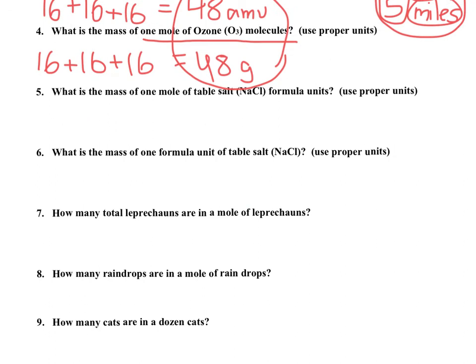Looking at number five here, what's the mass of one mole of table salt? Well, if I look at table salt, I've got one sodium and one chlorine. So, off my periodic table, sodium is about 22.99 for a mass, and chlorine we already wrote down earlier, is about 35.45. So, when I add those up, I get about 58.44.